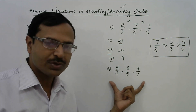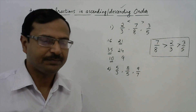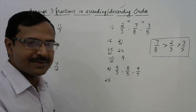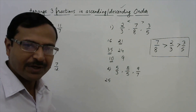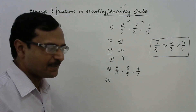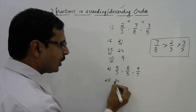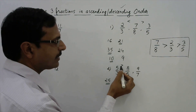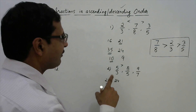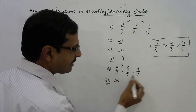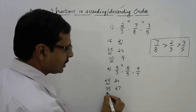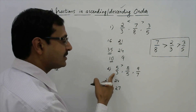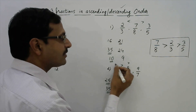Let's apply this trick to solve one more question. This is 5/3, 8/5, and 9/7. Comparing the first and second: 5 into 5 is 25 and 8 into 3 is 24. So out of 25 and 24, 25 is greater, obtained by multiplying the numerator 5 with the denominator 5. So 5/3 is greater than 8/5. Now compare 5/3 with 9/7: 5 into 7 is 35 and 9 into 3 is 27. So 35 is greater — again the product involving numerator 5 — so 5/3 is greater than 9/7 also. So 5/3 is the greatest fraction.